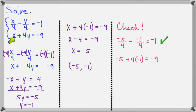So negative 5 plus 4 times negative 1 will give us negative 5 minus 4, which is negative 9, so that equation works also, and therefore our solution was correct.